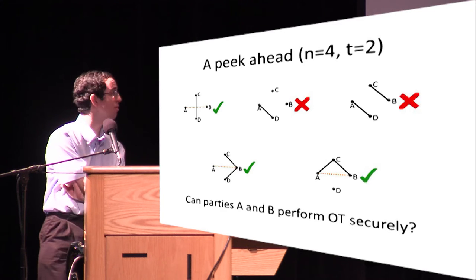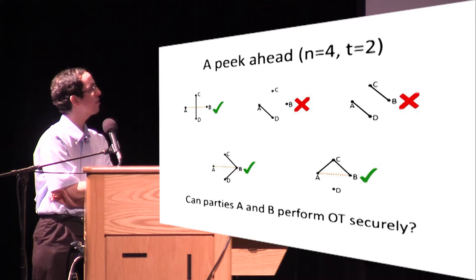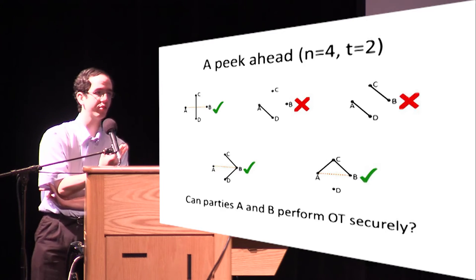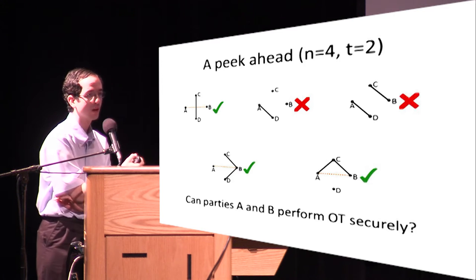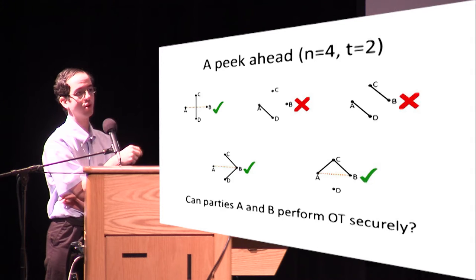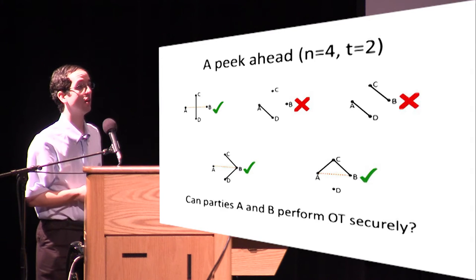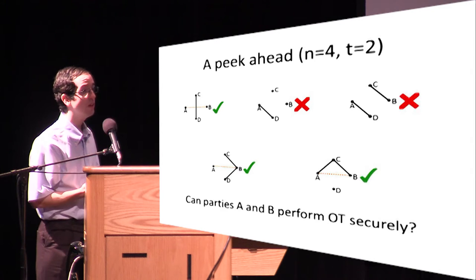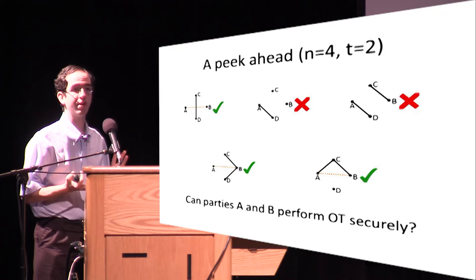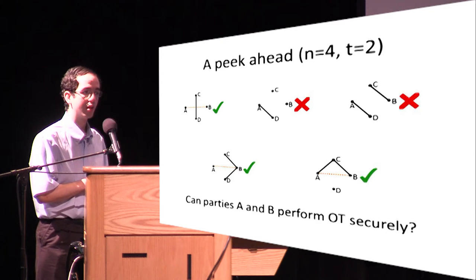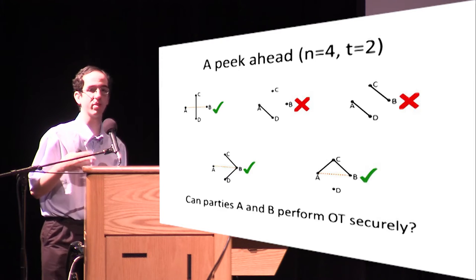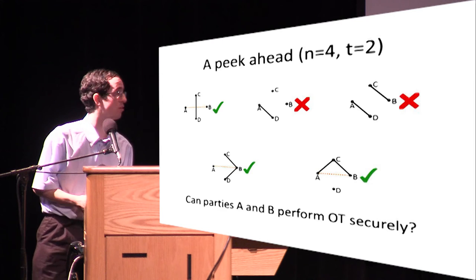From these examples, we can see that it's not just the number of OT channels present in the network or whether each party is connected to an OT channel that's relevant. The exact structure of the graph of OT channels is necessary to determine whether or not we can compute securely.